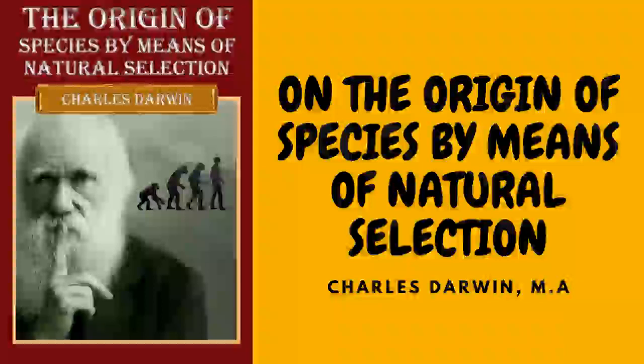When we look to the individuals of the same variety or sub-variety of our older cultivated plants and animals, one of the first points which strikes us is that they generally differ much more from each other than do the individuals of any one species or variety in a state of nature. When we reflect on the vast diversity of the plants and animals which have been cultivated and which have varied during all ages under the most different climates and treatment, I think we are driven to conclude that this greater variability is simply due to our domestic productions having been raised under conditions of life not so uniform as and somewhat different from those to which the parent species have been exposed under nature.